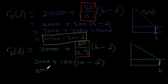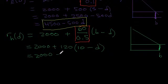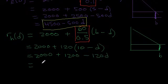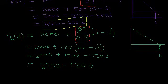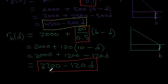Okay, so 2000, some equal signs in there, 2000 plus 1200 minus 120 D. And that equals, we'll add these two together, so that's 3200 minus 120 D. And that is the bid rent function for high income households.